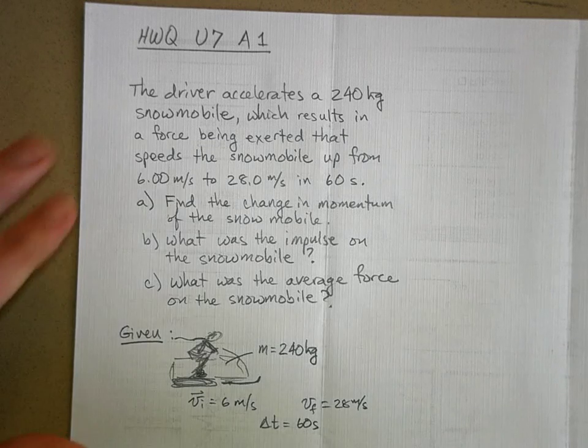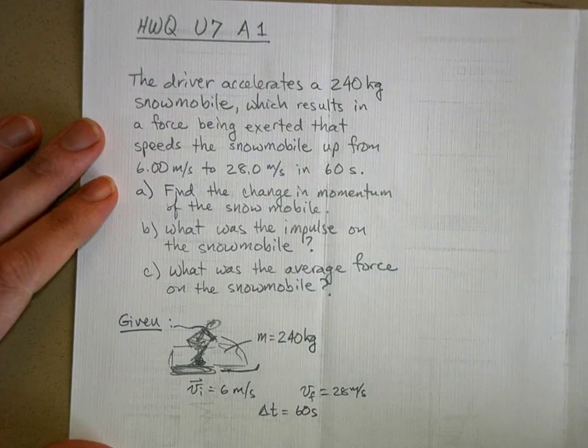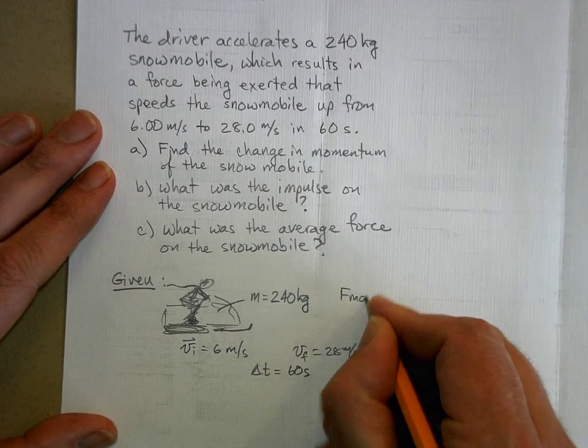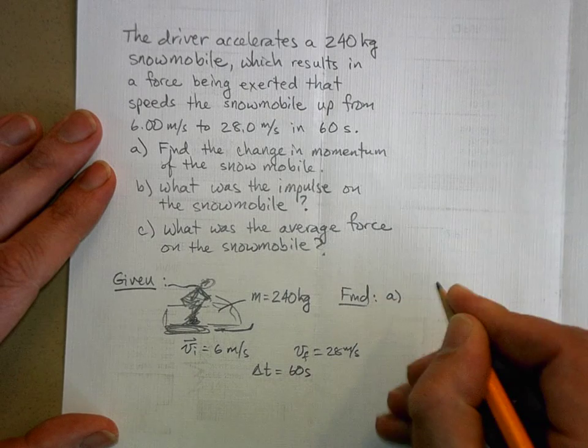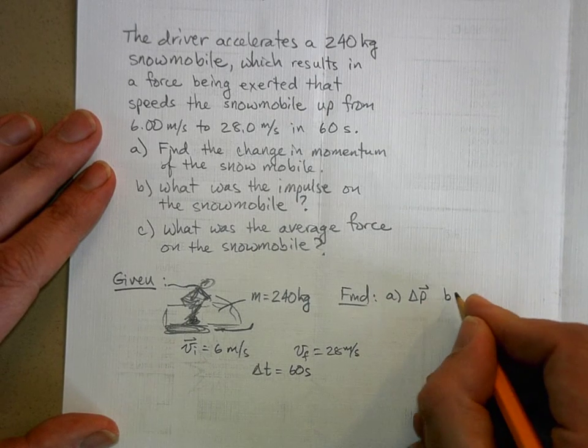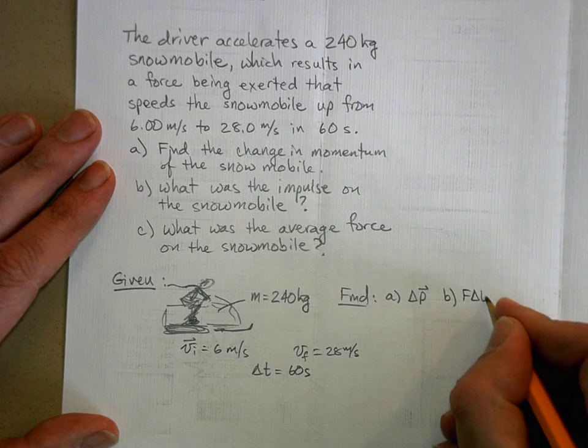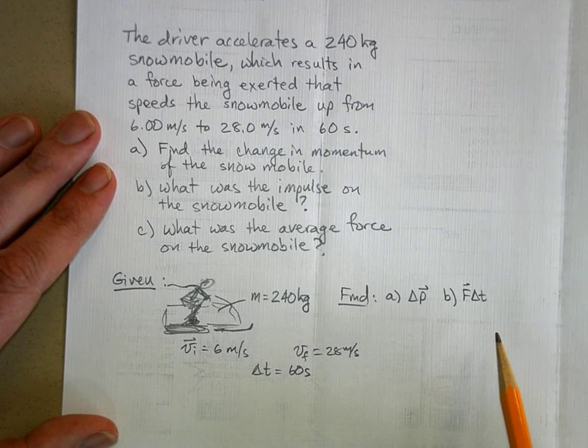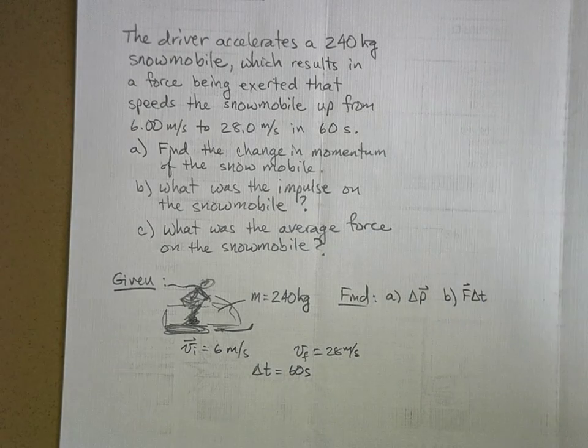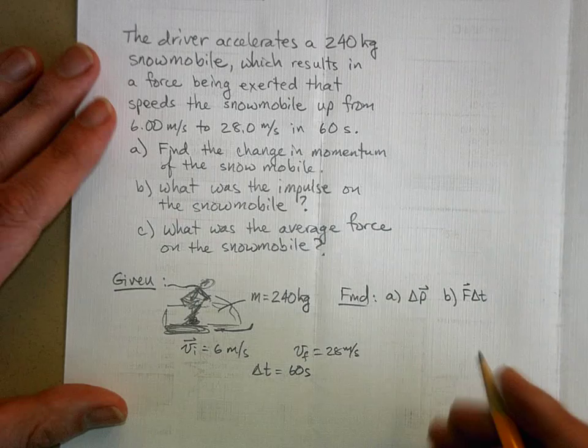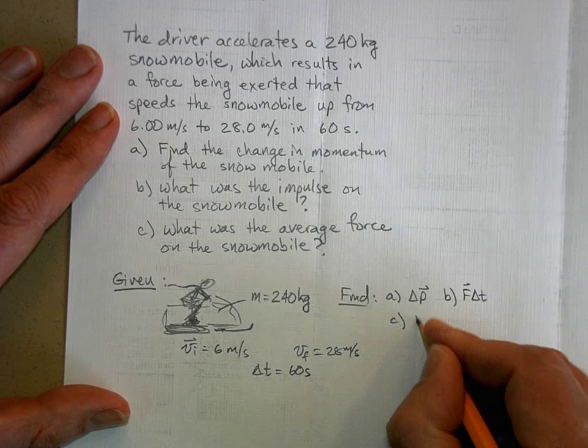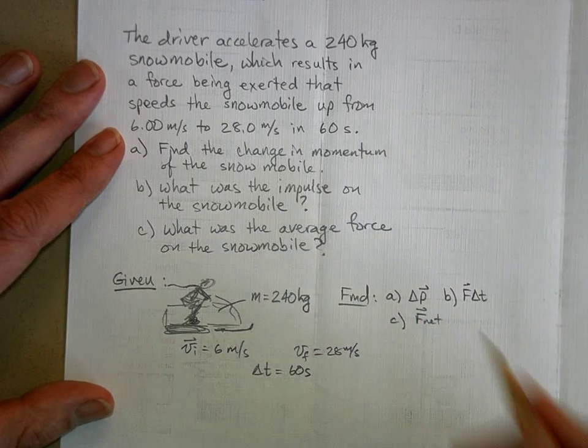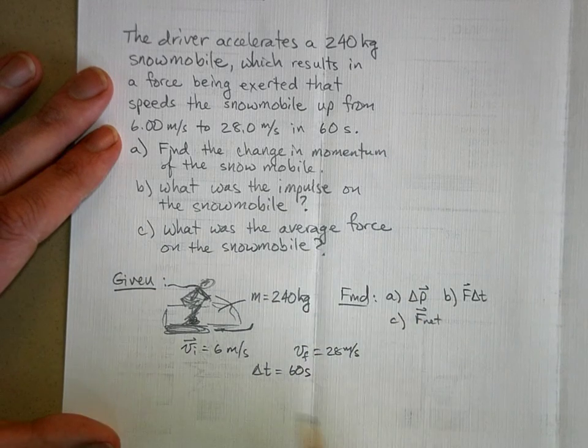And what we want to find, am I on screen there? So what I want to find is A, change in momentum, B, the impulse, which I'll just call force times time. There are people who call it I, capital I impulse, so you can use I if you want. And then part C, the average net force acting on the snowmobile. So let's solve it.